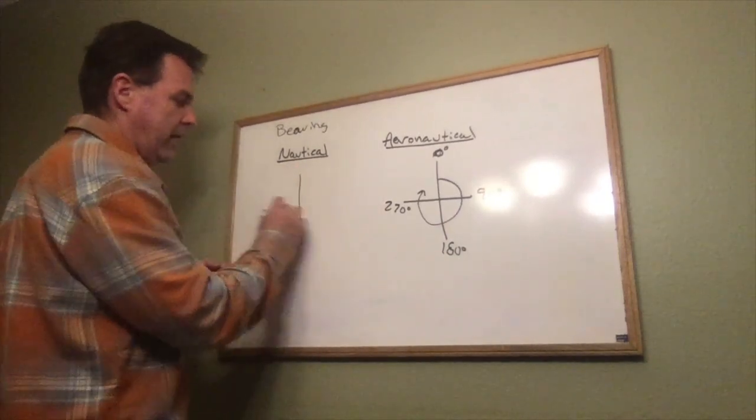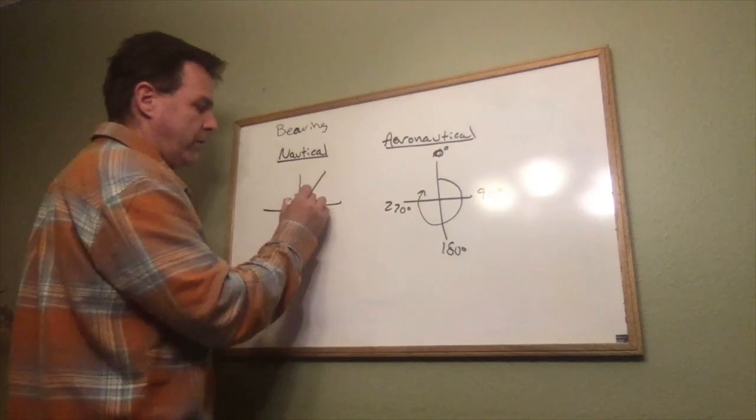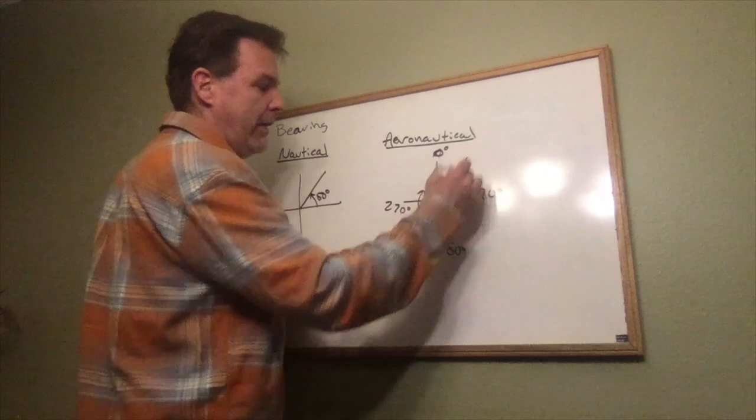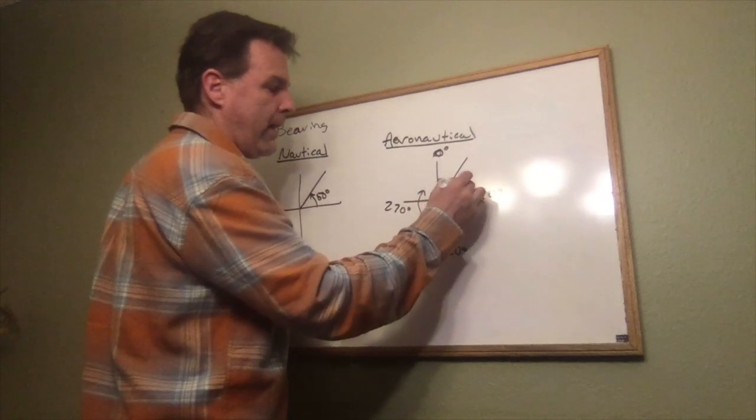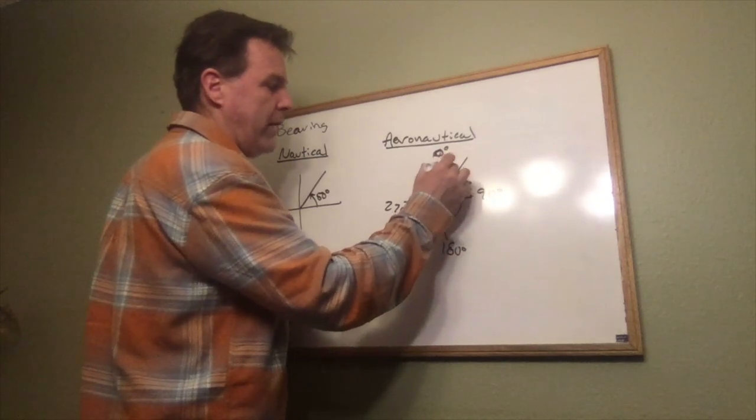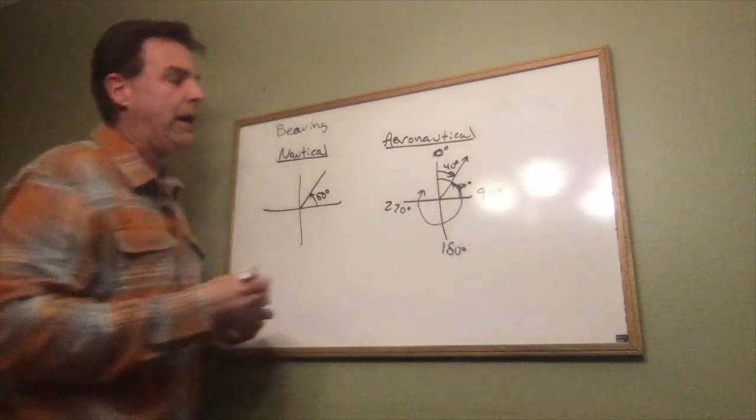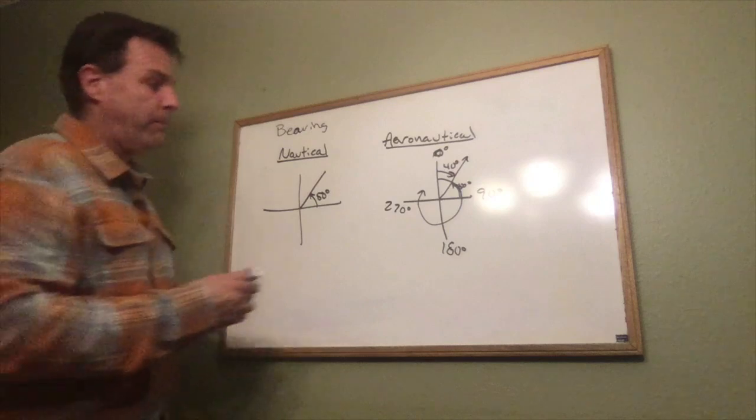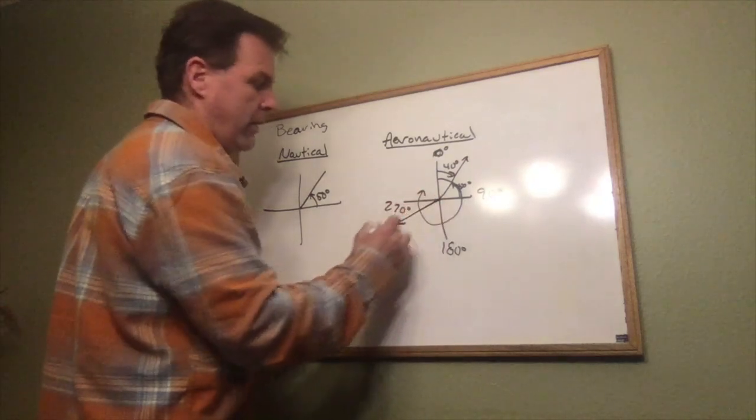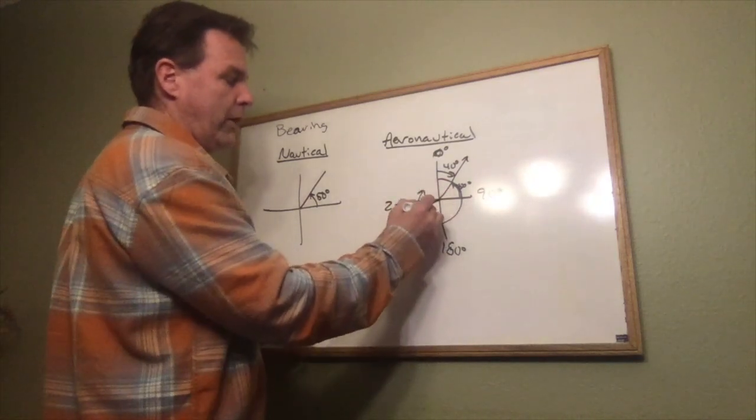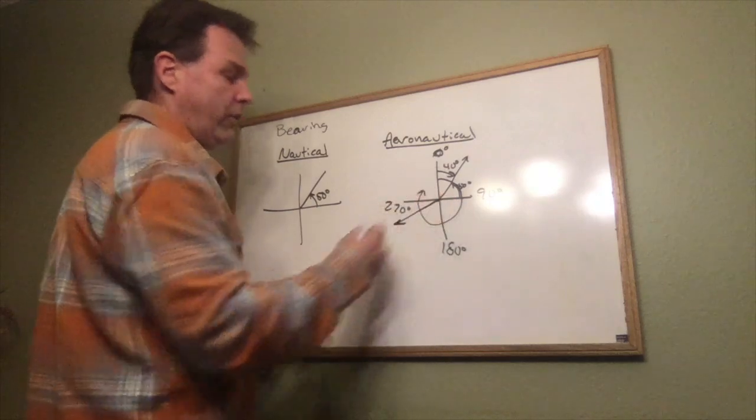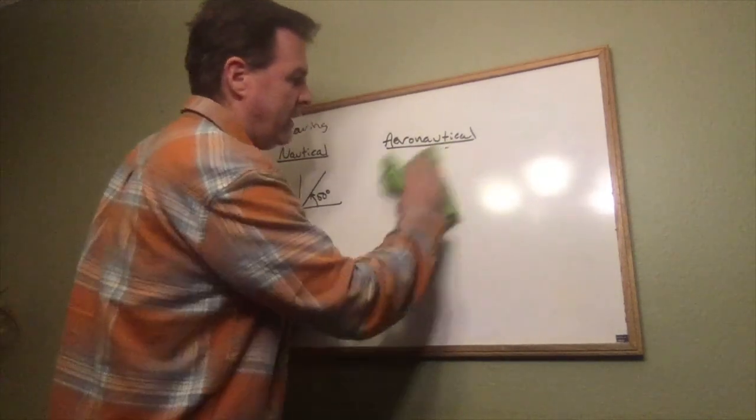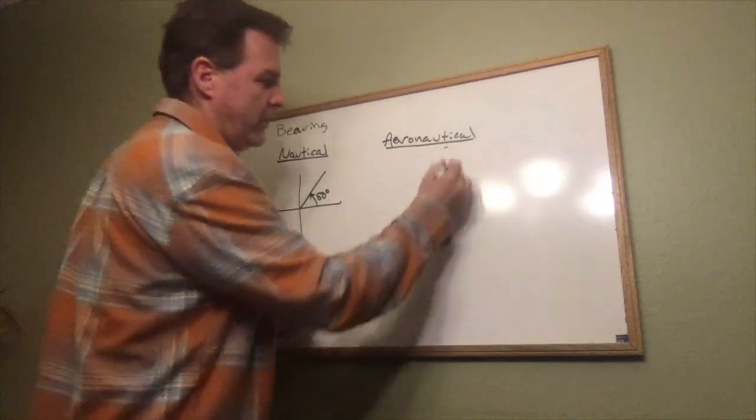So if I look at the angle that I had over here where we said this was 50 degrees, well as far as aeronautical goes, that 50 degrees is a 40 degree angle. Aeronautically, the pilot would just say I'm flying at a bearing of 40 degrees. If they were down here where we said this was 200 degrees, well we're not going to use 200.